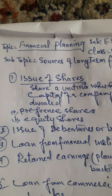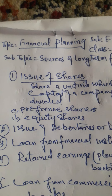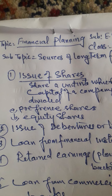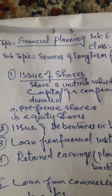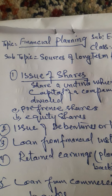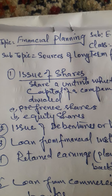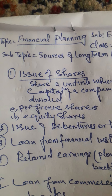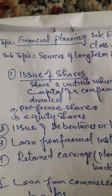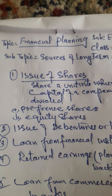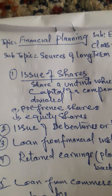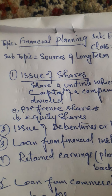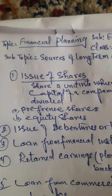The second type of shares is equity shares, also known as ordinary shares. The equity shareholders are the real owners of the company. They have a share in profit and also a share in loss. They are paid dividend after paying it to the preference shareholders, and the rate of dividend depends upon the profit of the company.